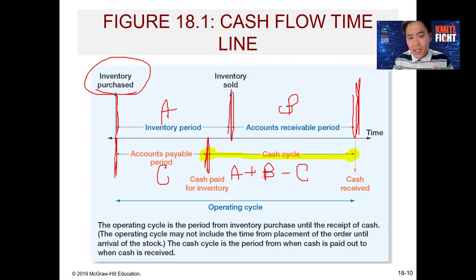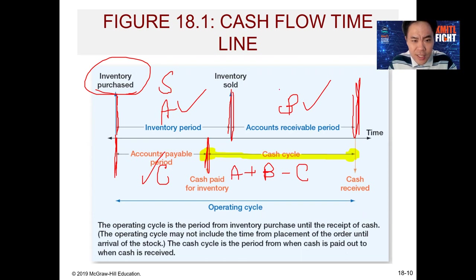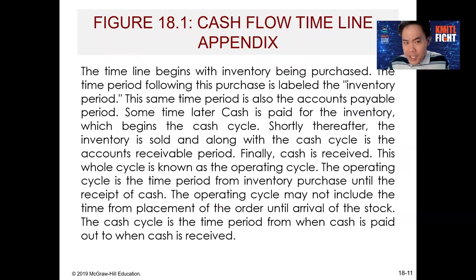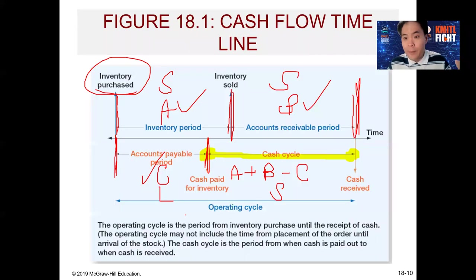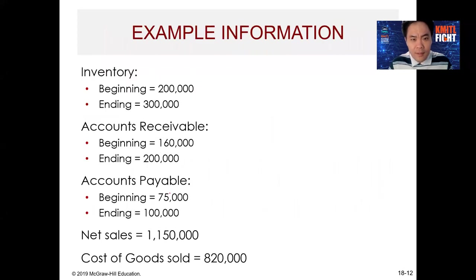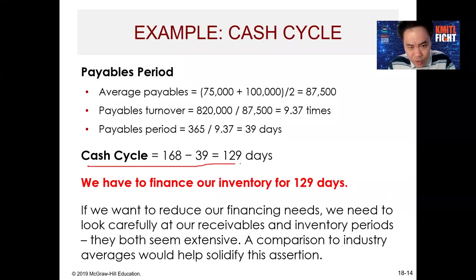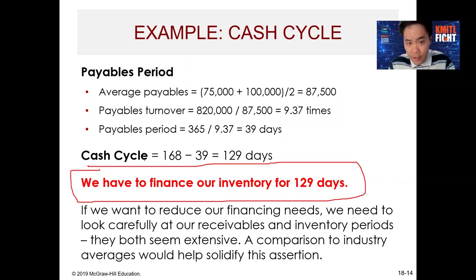The goal of this chapter is to minimize the cash conversion cycle gap and maximize the receivable period — shorter is better for the conversion cycle, longer is better for receivables. This topic will not be repeated in the final exam since it was already covered in the midterm.